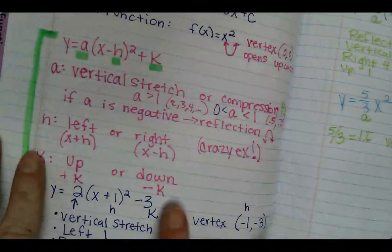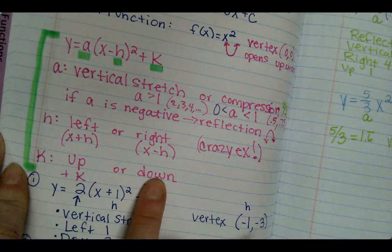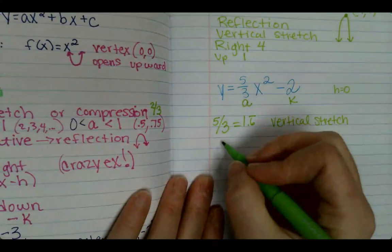A regular bowl will go up 1 over 1, but if it's a stretch it'll go up like 2 over 1, or maybe it's a compression, it'd go up half and over 1.